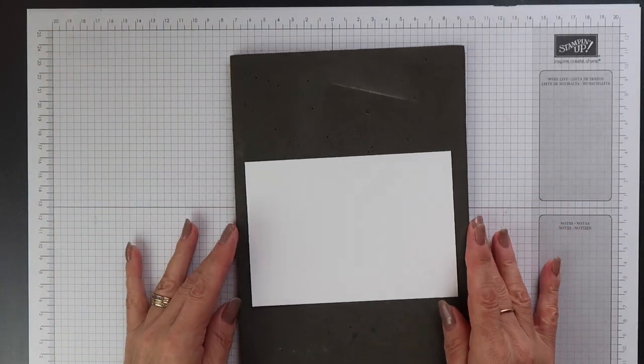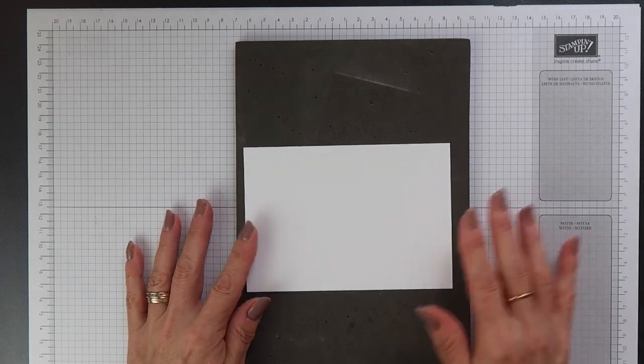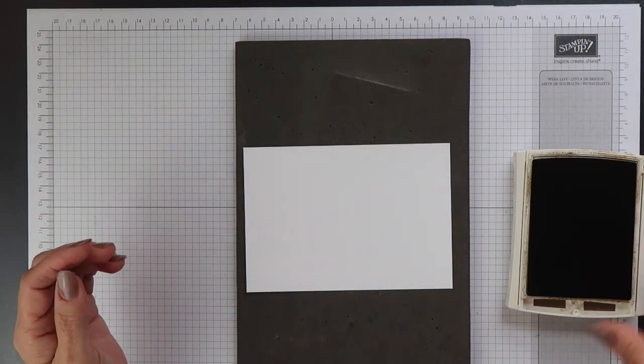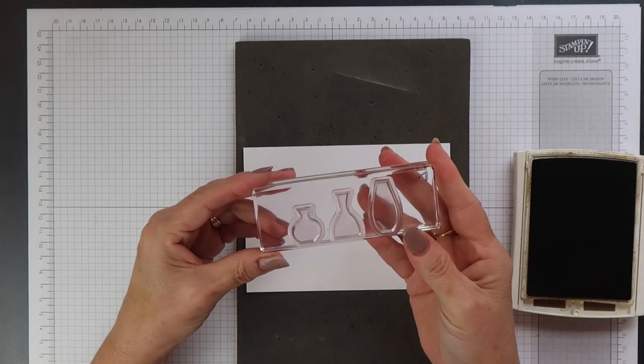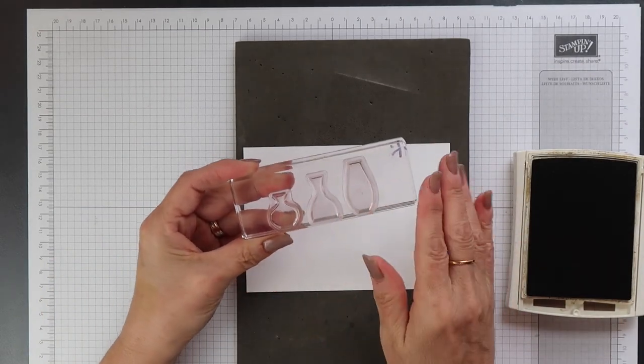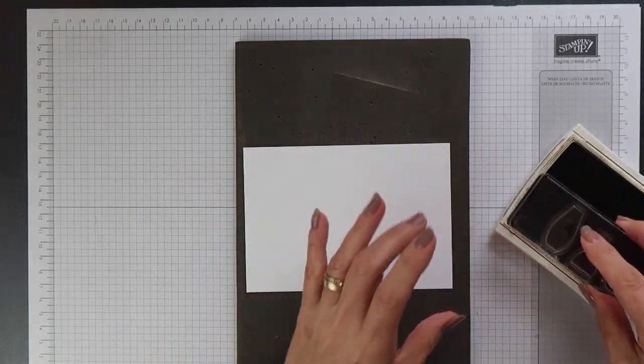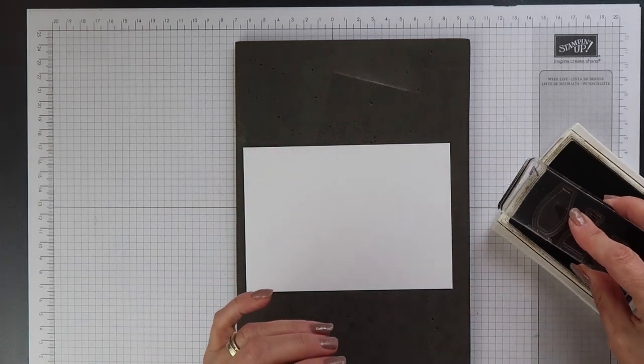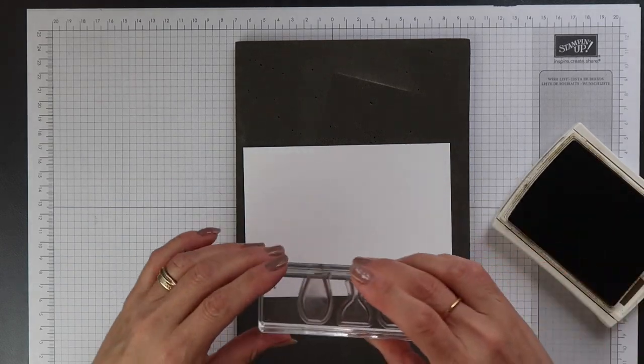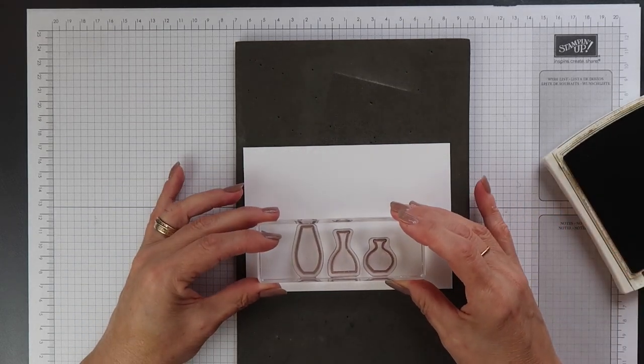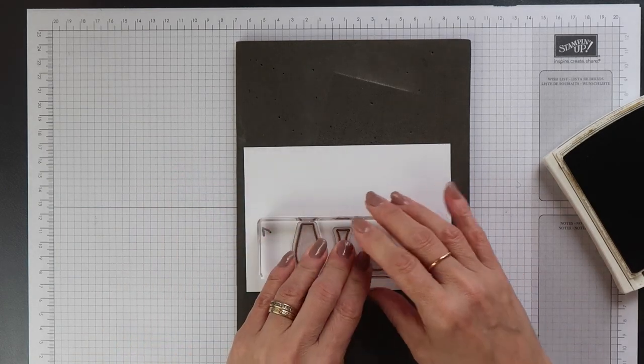I'm going to be stamping on our normal weight Whisper White cardstock and I'm going to use Soft Suede. Now again I've mounted my three vases on one block. These are the outline stamps, these aren't the solid images and you won't actually see these when the card is finished. It's just to guide me as to where to place the flowers when I stamp them.